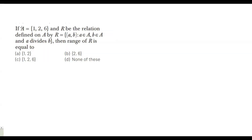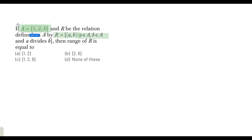The next question gives set A and defines a relation R on A, meaning both domain and range belong to set A. R consists of ordered pairs (a, b) where a belongs to A, and the relation is defined as 'a divides b.' So we know: 1 divides 1, 1 divides 2, 1 divides 3, 2 divides 2, and so on.